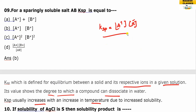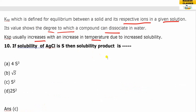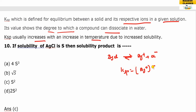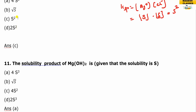For sparingly soluble HCl, the ions are H⁺ and Cl⁻. KSP equals the solubility of H⁺ times the solubility of Cl⁻, which equals S × S = S². So KSP = S².